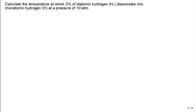Here's a problem. Calculate the temperature at which 2% of diatomic hydrogen dissociates into monatomic hydrogen at a pressure of 10 atm. So the reaction equation of interest is H₂ dissociating into two H's.